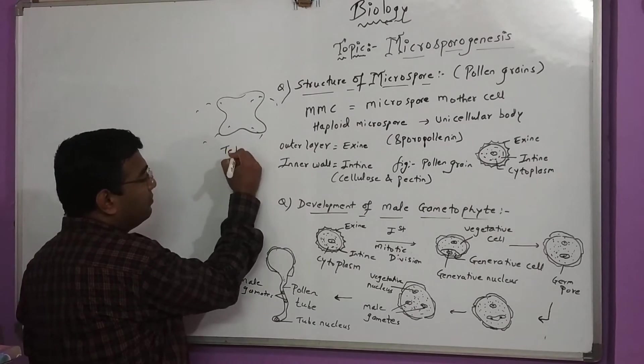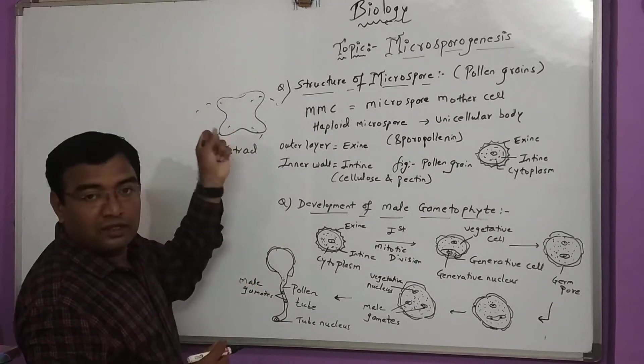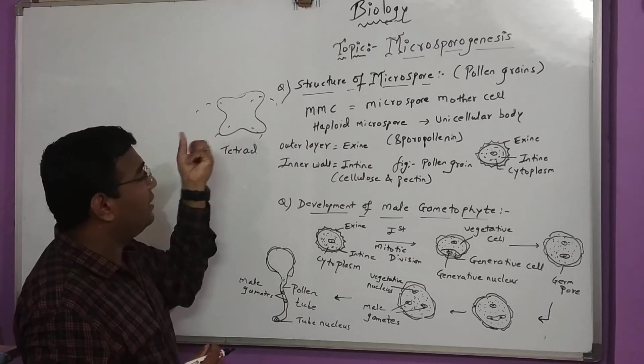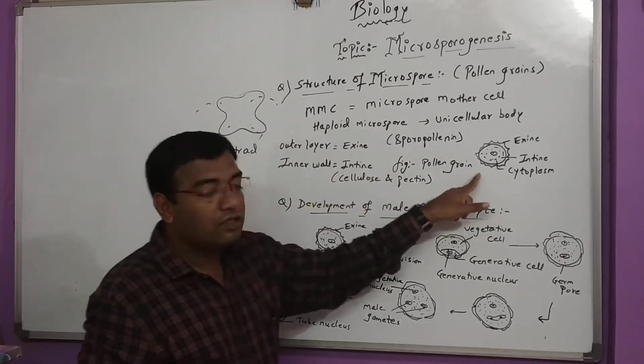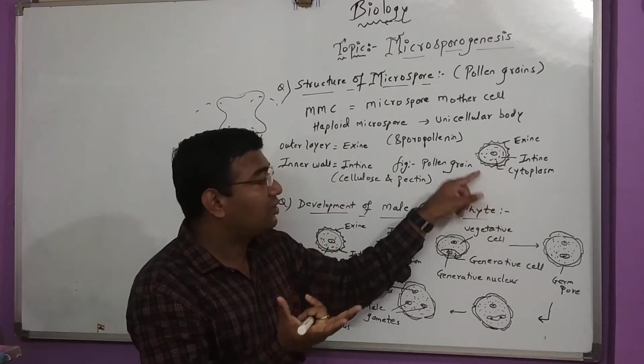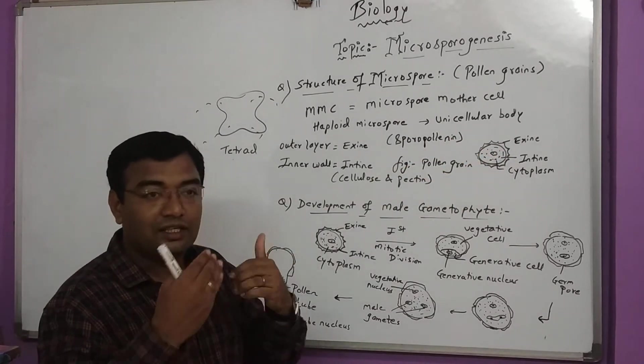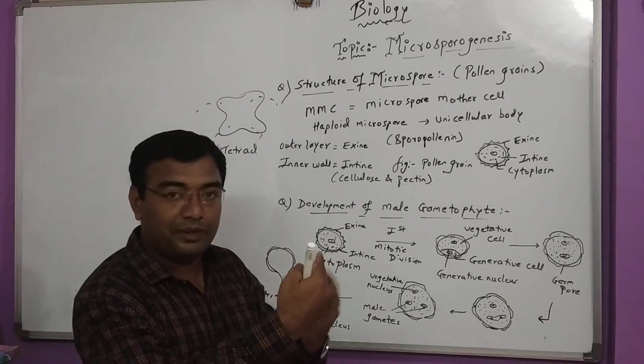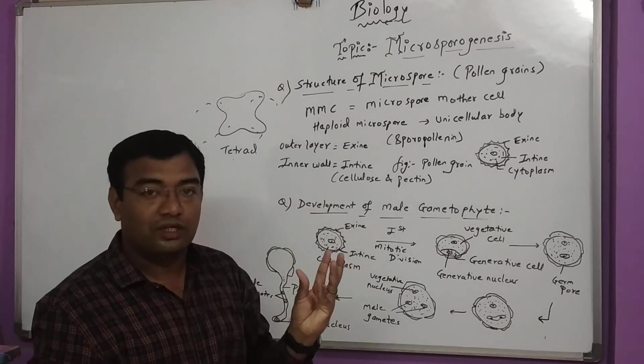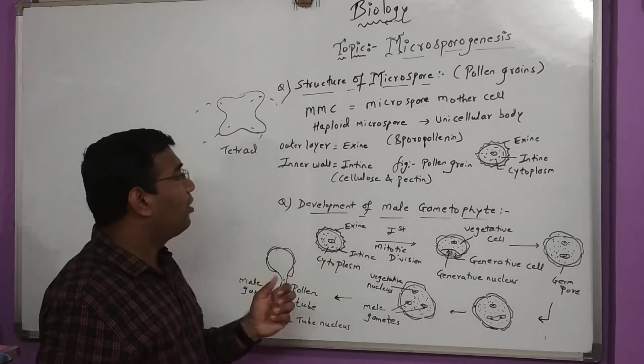This is a tetrad form. When they dehisce, they are released as pollen grains. The pollen grains help in pollination. Transfer of pollen from the male part to the female part is known as pollination. The male gamete reaches the female gamete at the stigma, and then fertilization occurs.